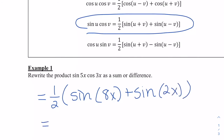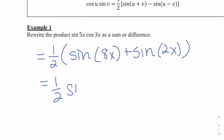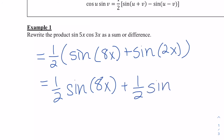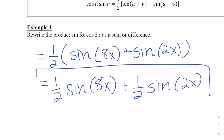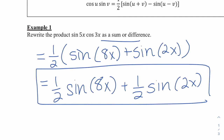I'm just going to distribute the one half here, so we get one half sine of 8x plus one half sine of 2x. And that's all we can do. We could do more using double angle formulas, but the problem just asks us to rewrite it as a sum or difference.